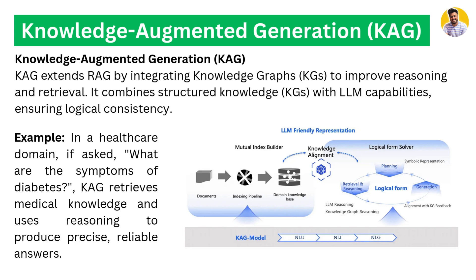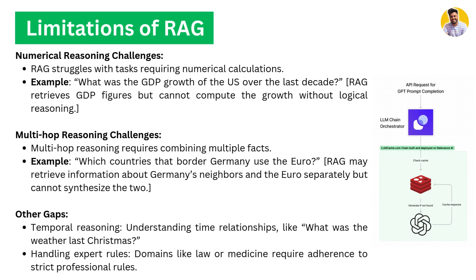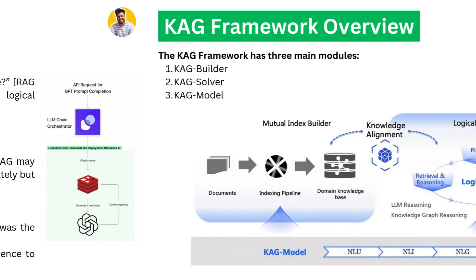The basic limitations of RAG are that it does not have reasoning abilities. It always struggles with numerical calculations and with reasoning tasks where you have to hop multiple times between multiple facts. It also has a gap in creating relationships between multiple contexts. These are the key limitations of RAG, which is why we use CAG.